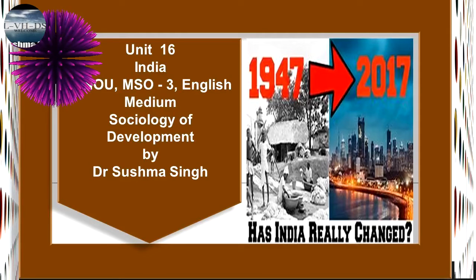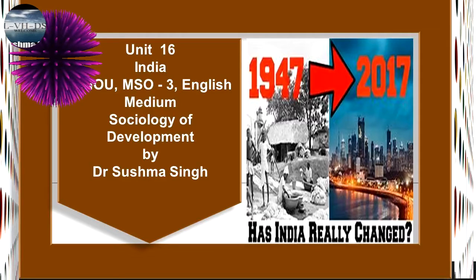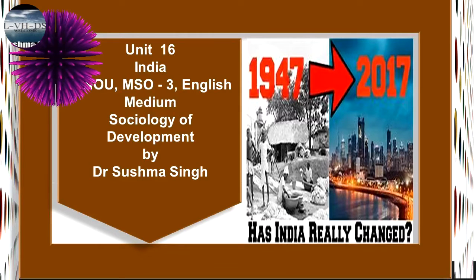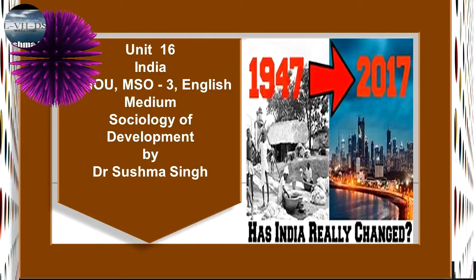First Five-Year Plan, 1951–1956. The first five-year plan paved the way for the planned economic development of the country. It had two main objectives. First, to bring the Indian economy out of the state of stagnation caused by the Second World War and partition of the country. Secondly, it initiated the process of all-round balanced development of the Indian economy, so as to ensure a steady improvement in the living standards of the people over a period of time.